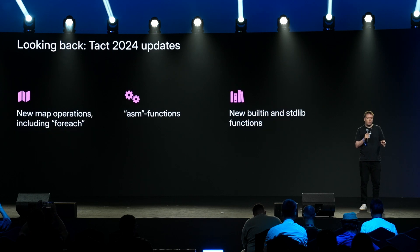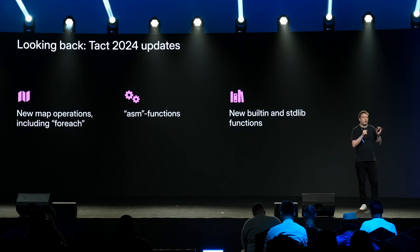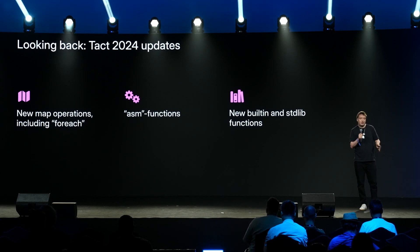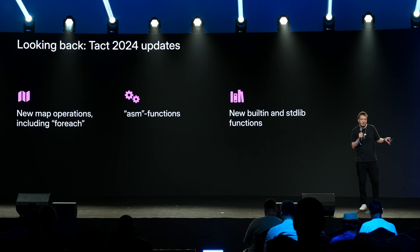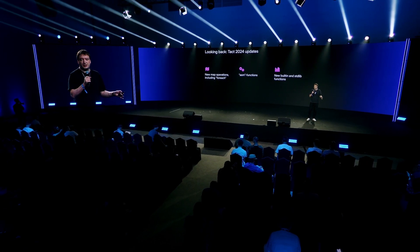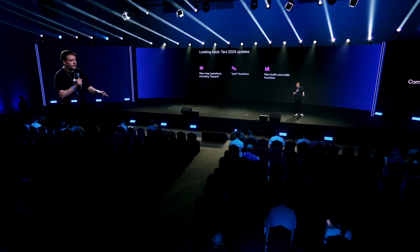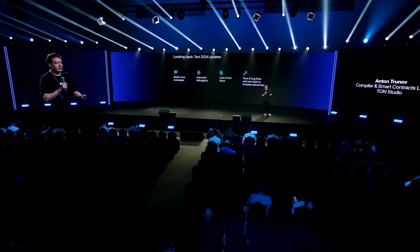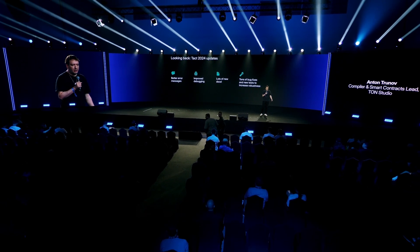There's a lot more around serializing and deserializing structures using map operations. It's really easy in TACT to traverse a map — you just use for-each and you get all the keys and values. Recently we added assembly functions, so you can go lower level with TACT to save on gas. There are new built-ins and new standard library functions, and we are still growing the set of available functions out of the box. There are also better error messages from the compiler.